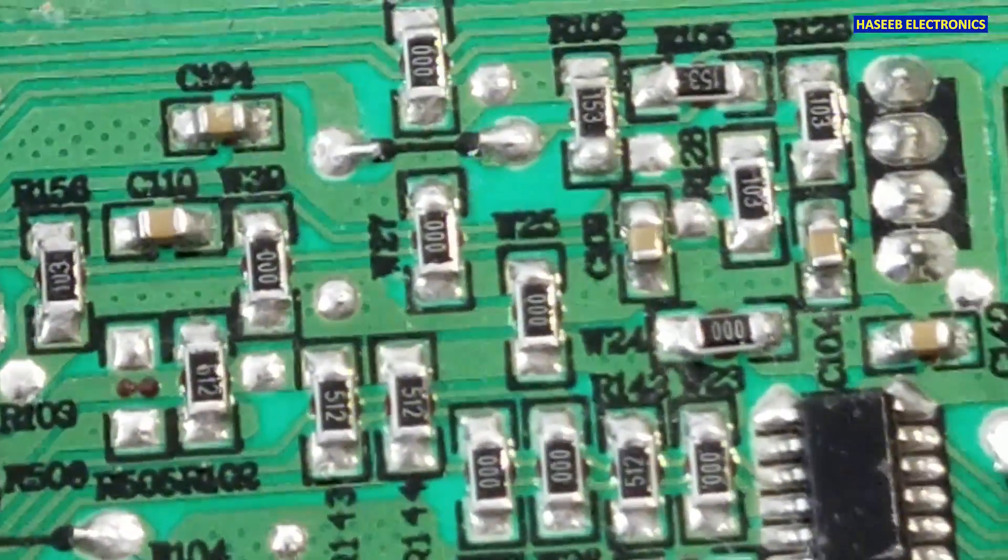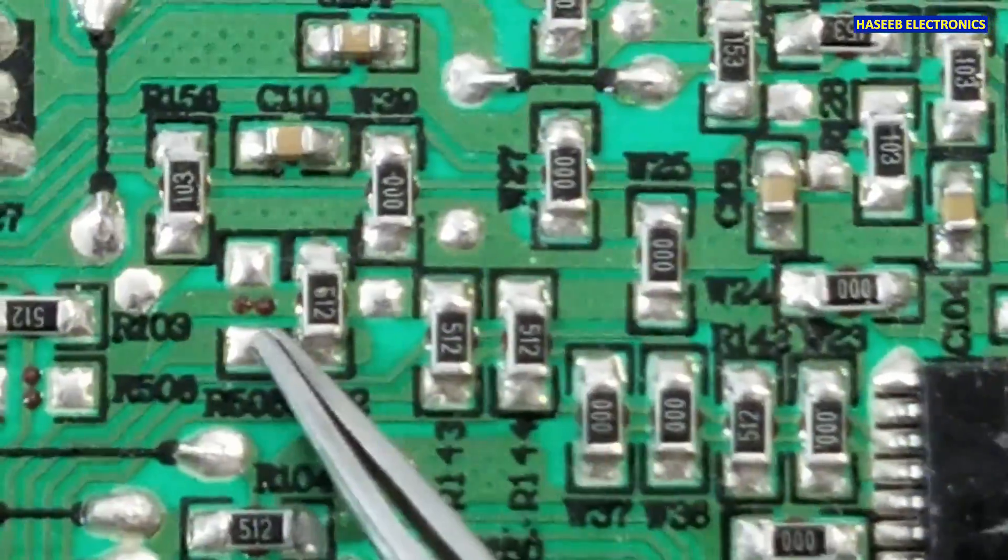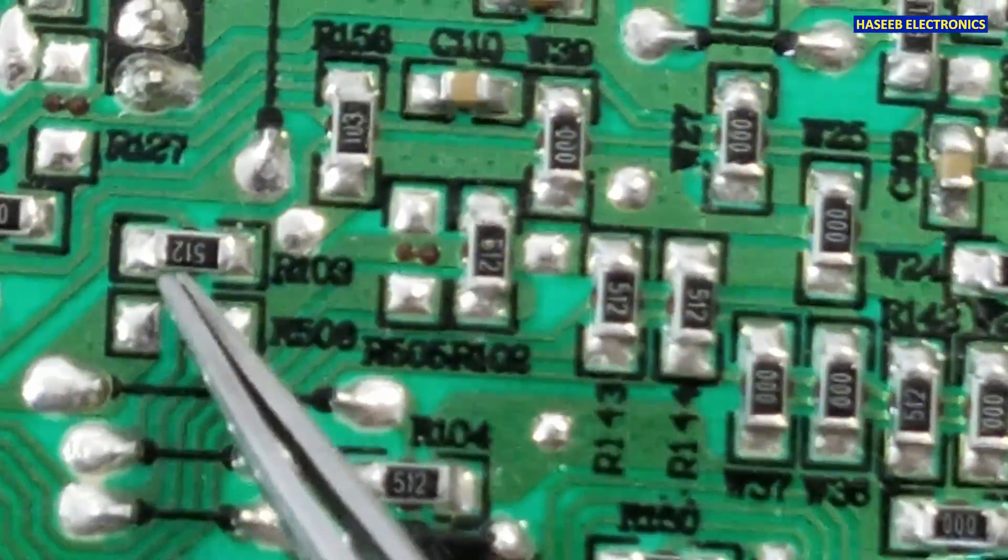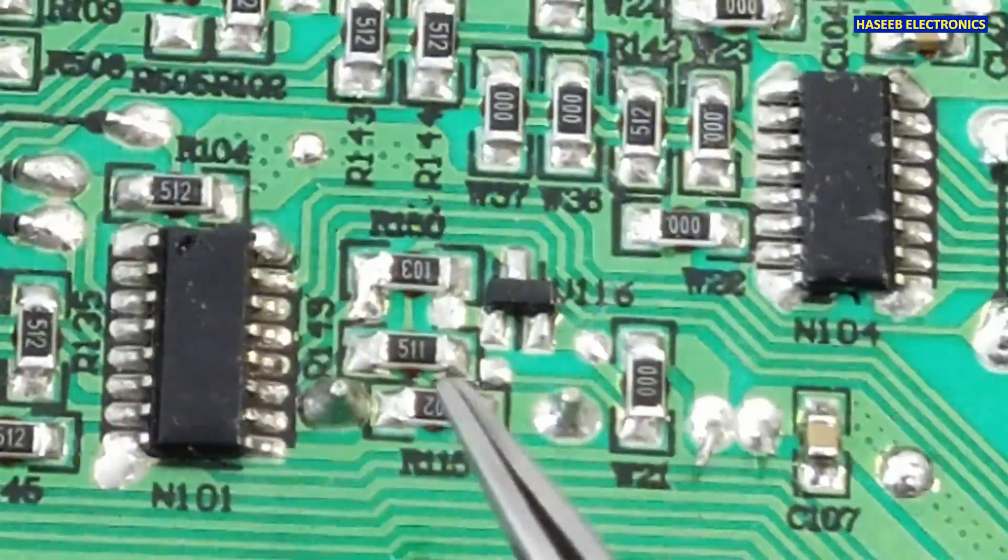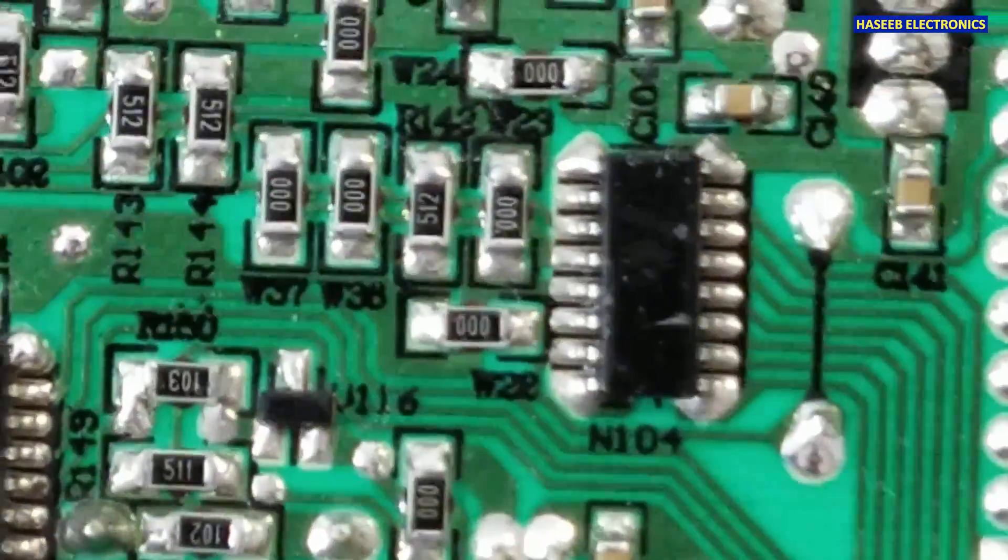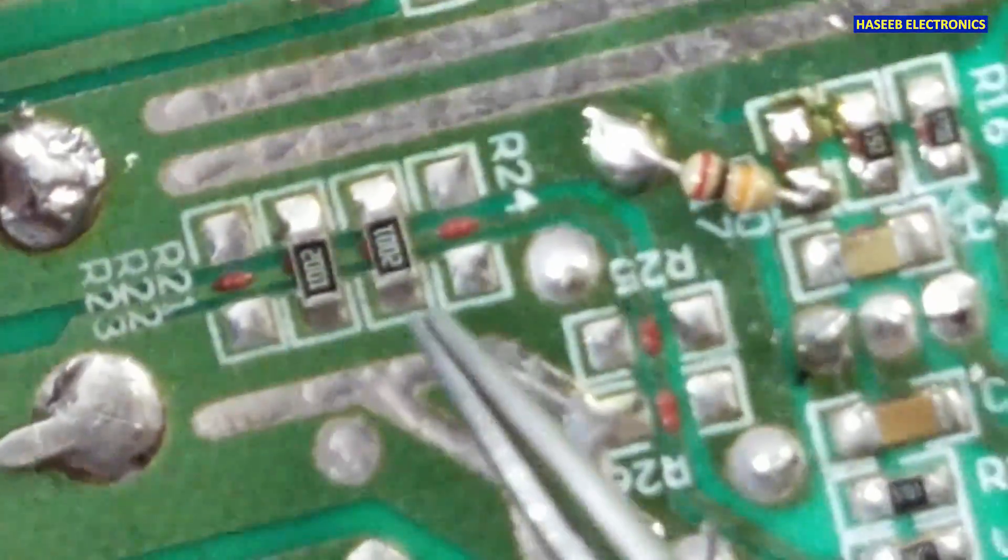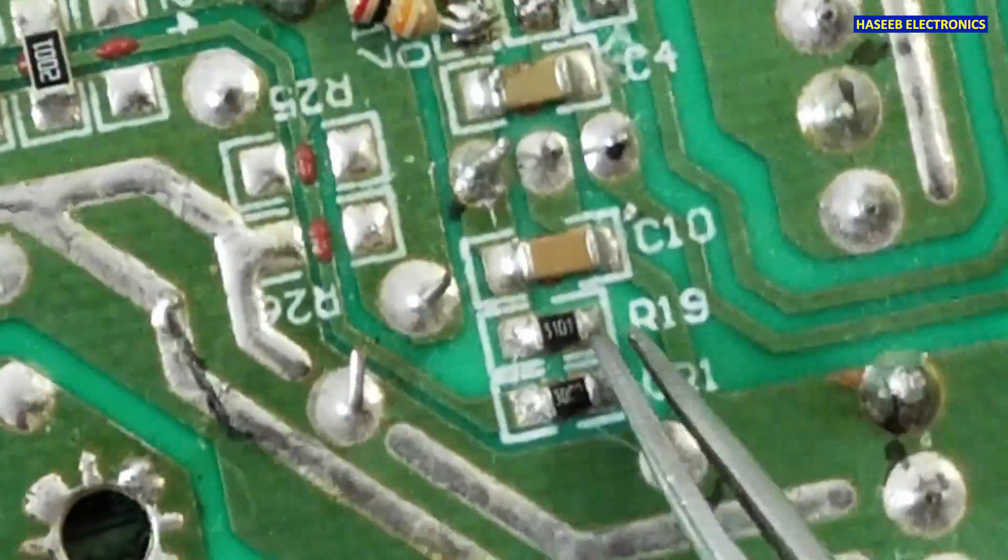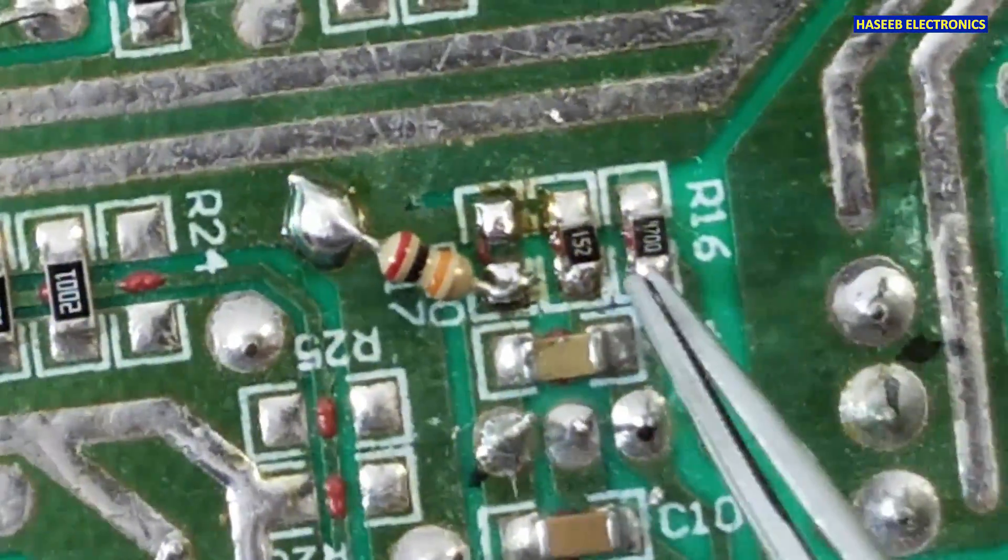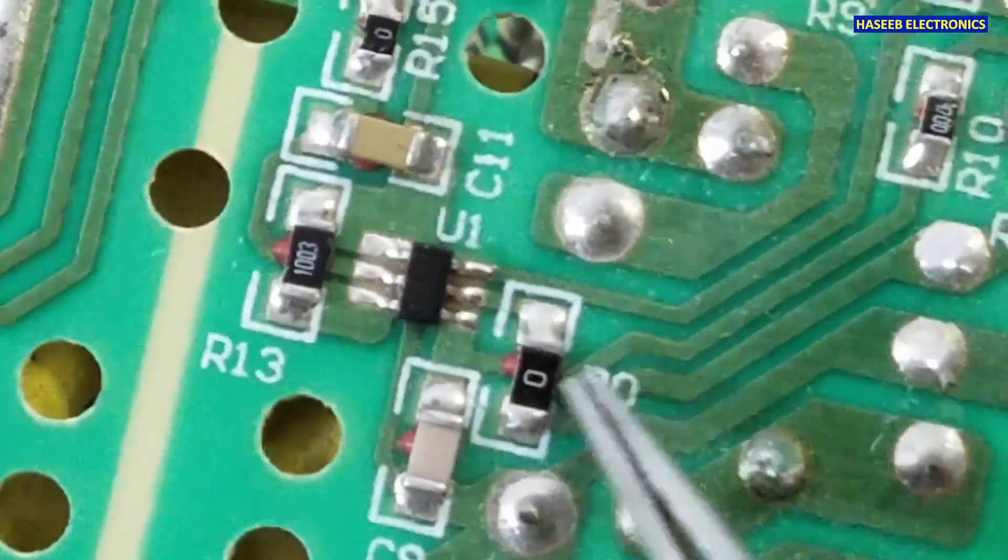Asalaamu alaykum wa rahmatullahi wa barakatuhu. Friends, welcome back to my channel. When we see SMD resistors, there is a code 512, 103, 102, 511. What is the meaning of this code? And if we see on this board, here it is mentioned 1002, 5101, 152, 1003, 0.